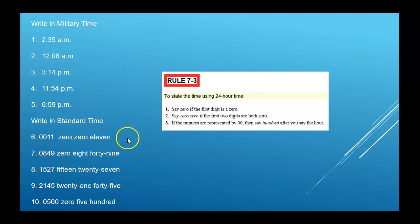So write these in standard time. 0011, remember that's right at 11 minutes after midnight. So you would write that as 12:11 a.m. 0849, that's 8:49 in the morning, 8:49 a.m. 1527, so anytime you're after 1200 hours, you're into the afternoon. So if you subtract 12 from 15, that's 3. So this is actually 3:27 in the afternoon, which would be 3:27 p.m. 2145, you subtract 12 from 21, and that's 9:45 p.m. So that's 9:45 p.m. 0500 hours, that's 5 o'clock in the morning, 5:00 a.m.